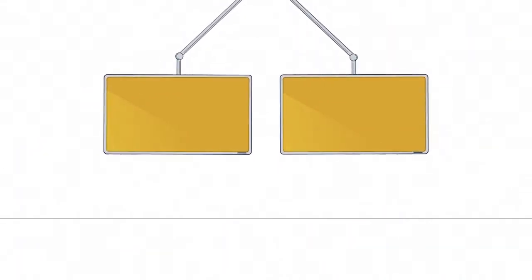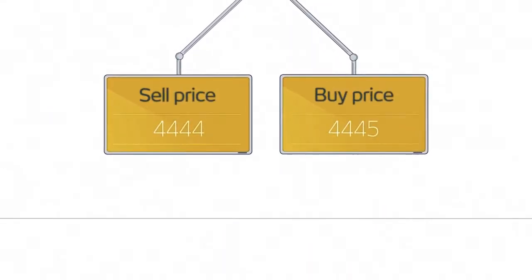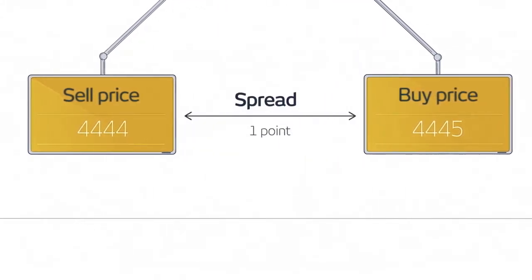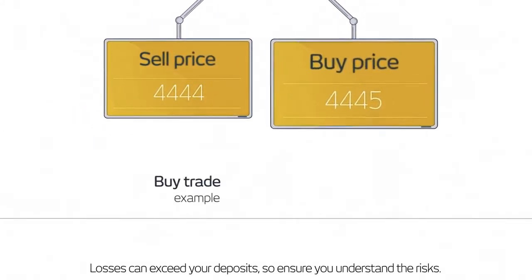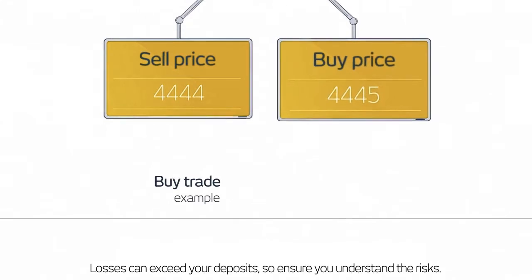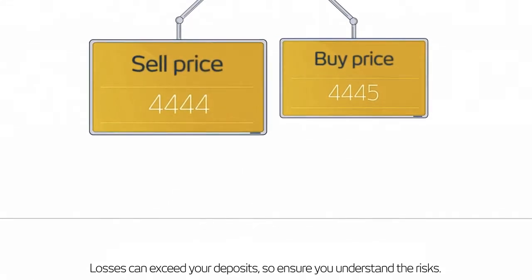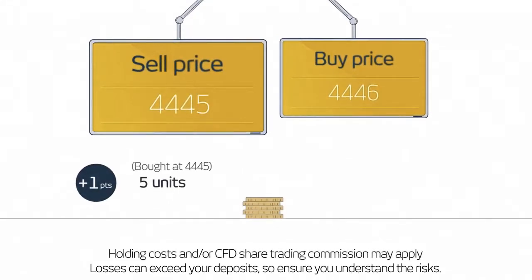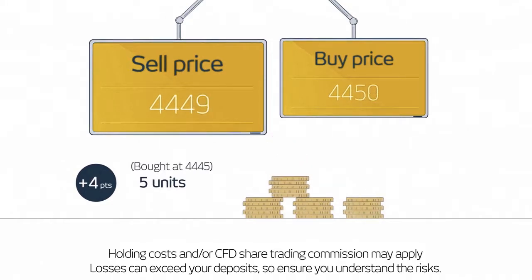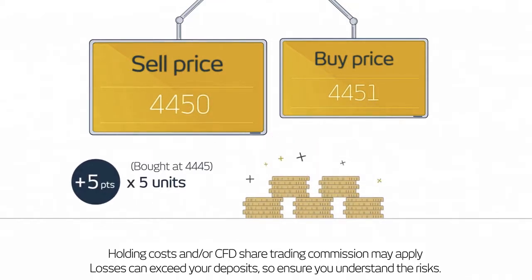Each product has a sell and a buy price. The difference between the two is called the spread. Your profit or loss is based on the difference between the price you enter at and the price you exit at. The more points the market moves in your chosen direction, the more profit you make. This difference, multiplied by the number of units, equals your profit.